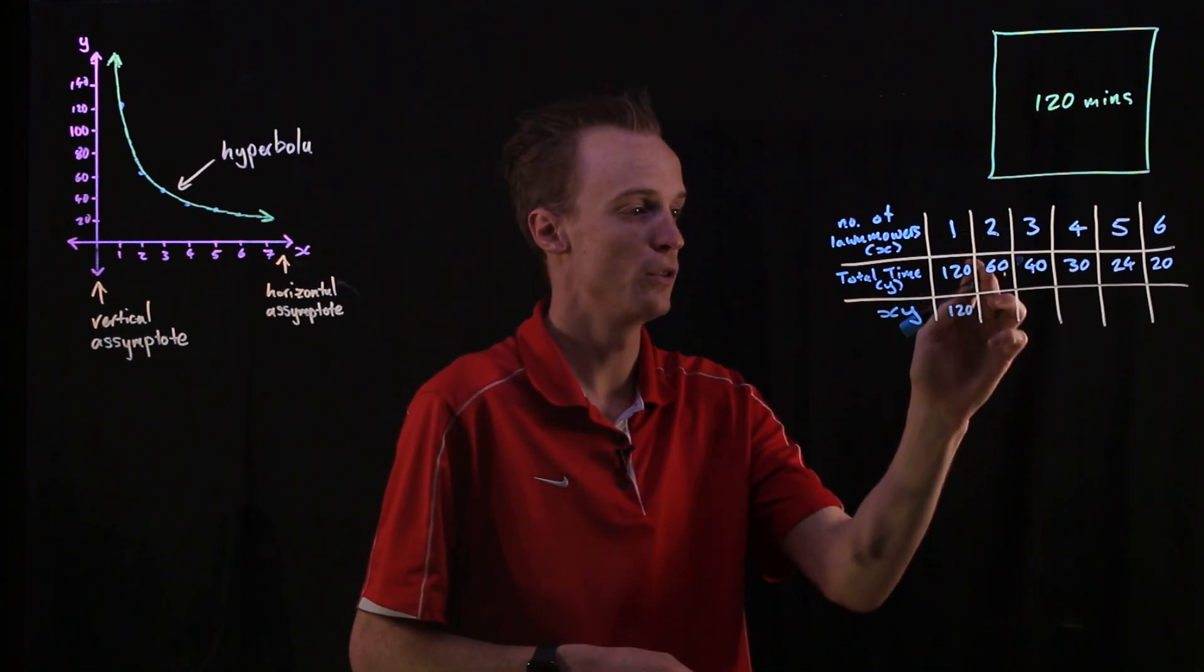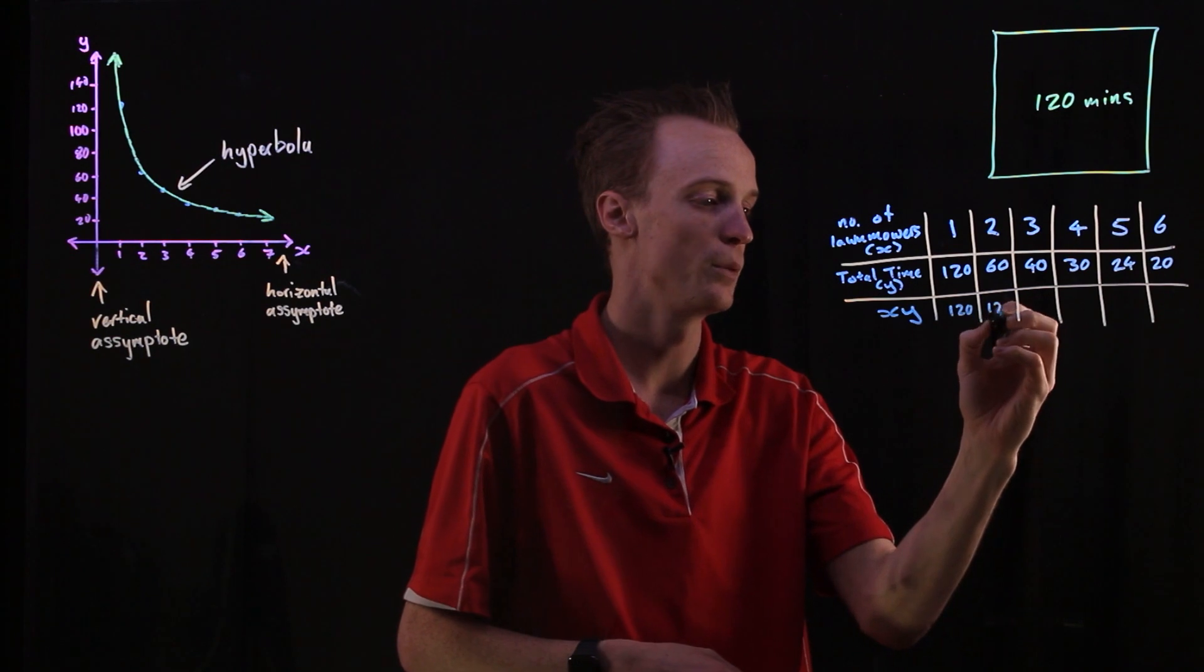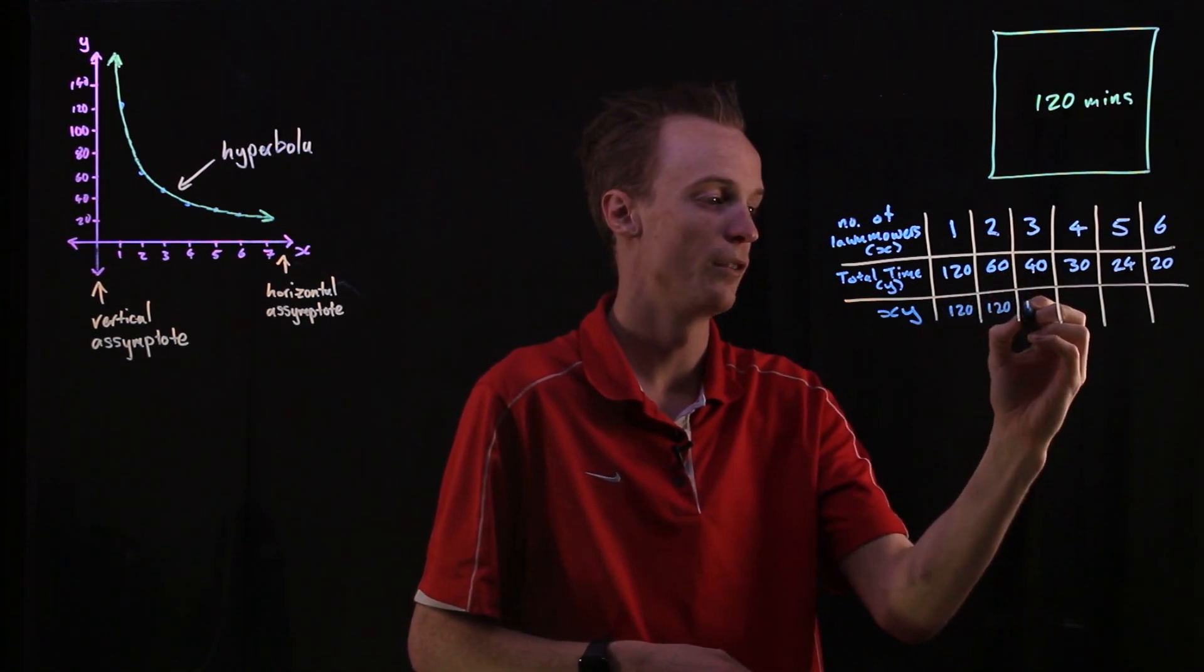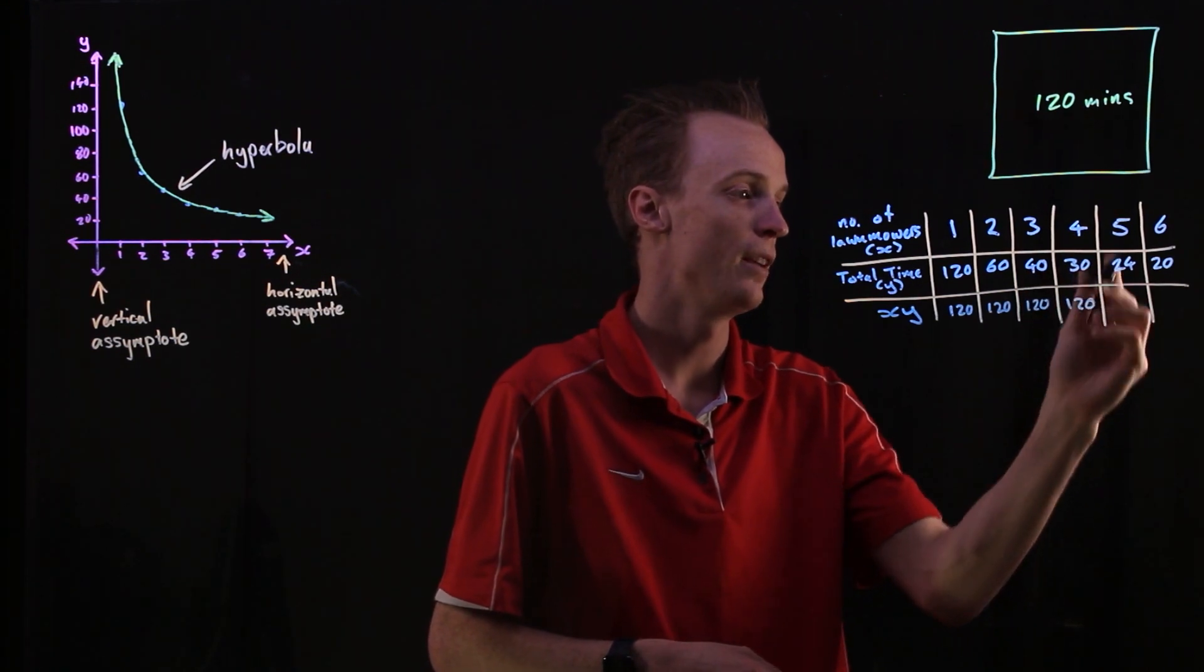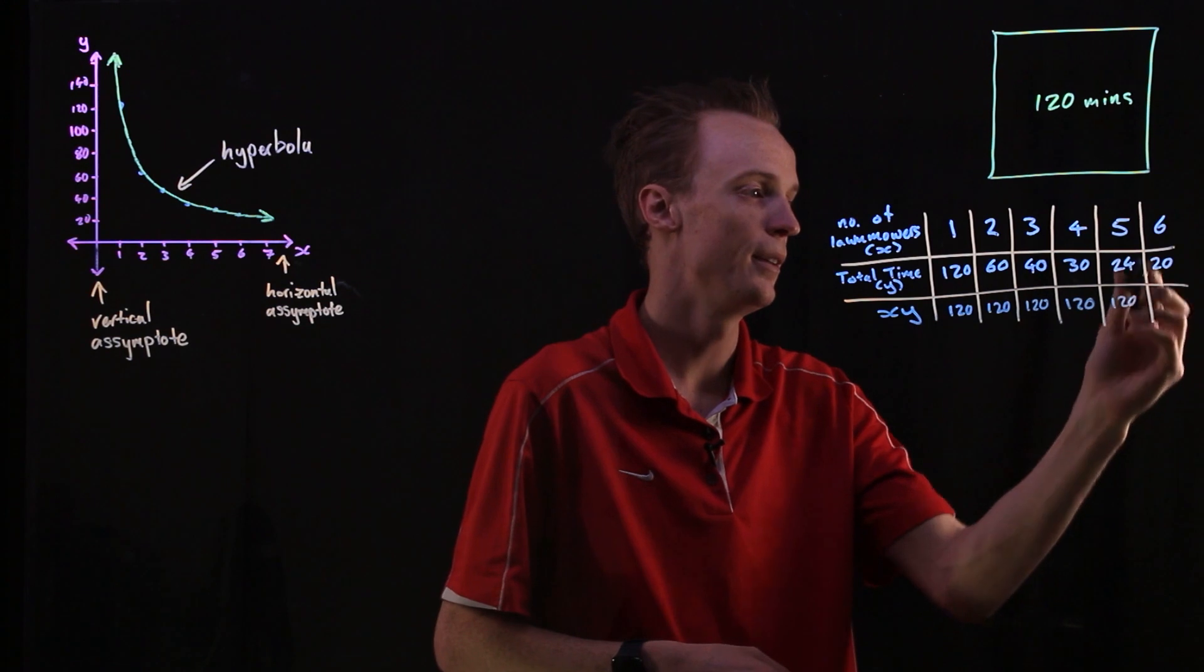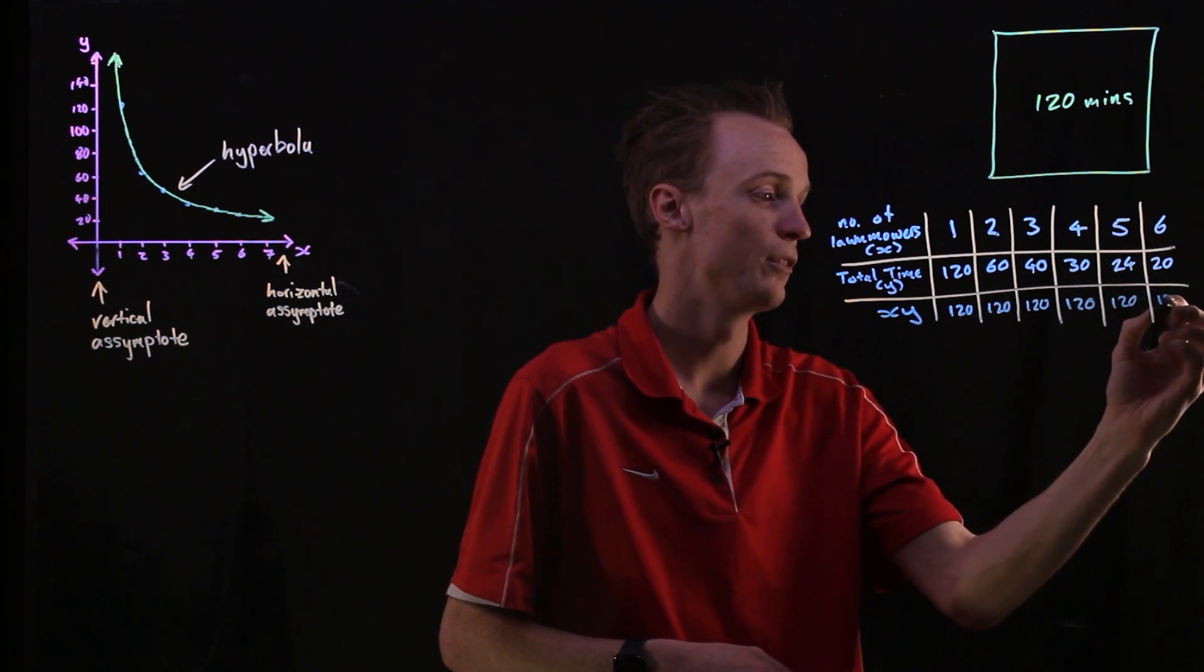In the second one, I've got 2 times 60, which is 120. 3 times 40 is 120. 4 times 30 is 120. 5 times 24 is 120. 6 times 20 is 120.